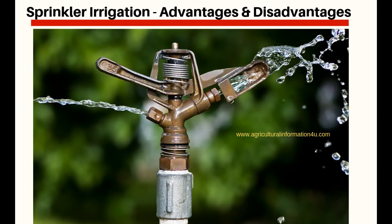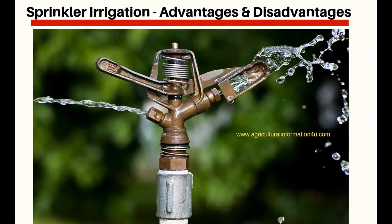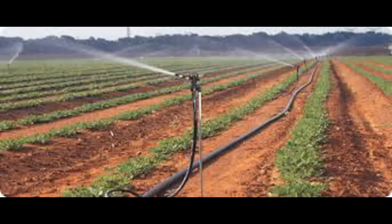In sprinkler irrigation method, water is sprinkled into the air and allowed to fall on the ground surface just like rainfall. The spray is done by the flow of water under pressure through small orifices or nozzles. The pressure is generally obtained by pumping. Through proper selection of nozzle sizes,